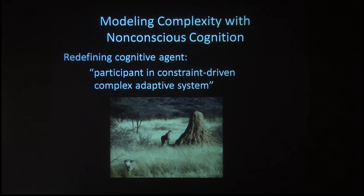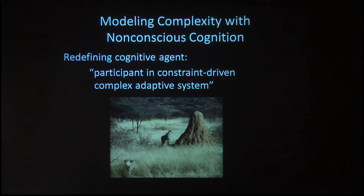This is an example of a termite mound. A termite mound is a complex architectural structure. Each termite only has a few instincts in its head. But by laying down pheromone trails and engaging in these instincts, the individual termites create a system that has complex emergent effects — that is, the creation of the termite mound. We can now think about a cognitive system, or an agent in a cognitive system, as a constraint-driven, complex, adaptive system.